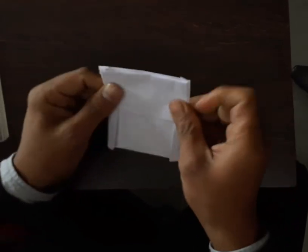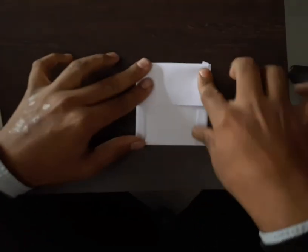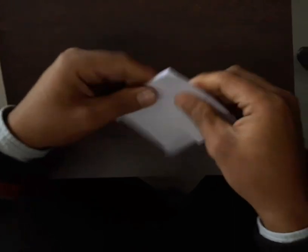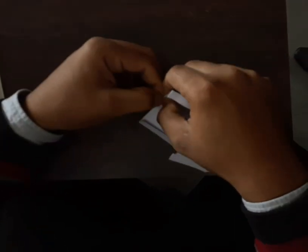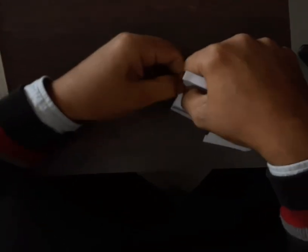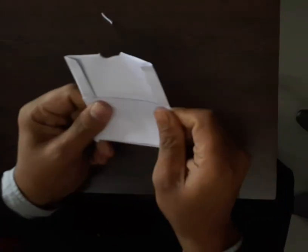Now your half of the part is completed. Now make one small hole in this side, okay? Now your paper vesture is ready too.